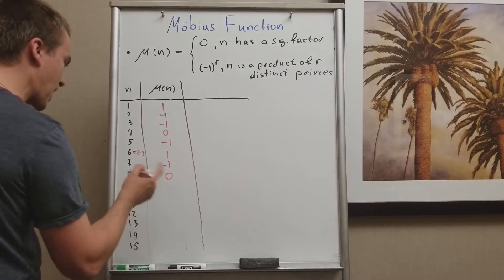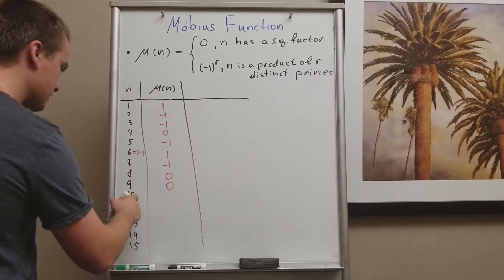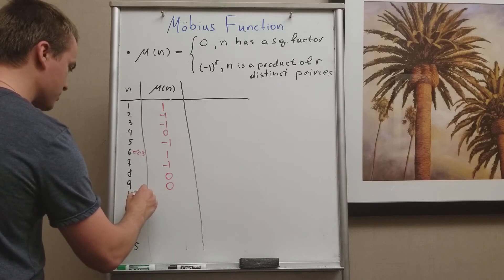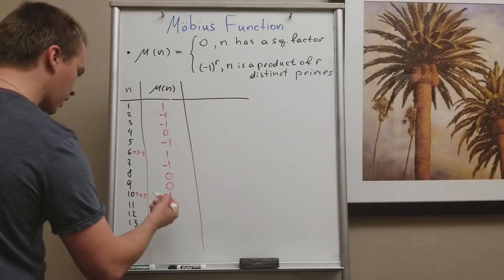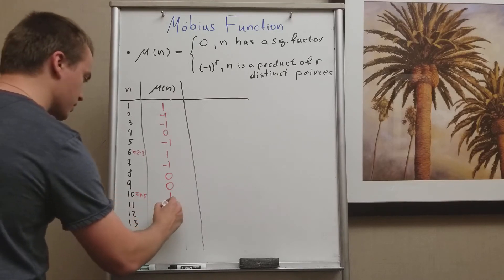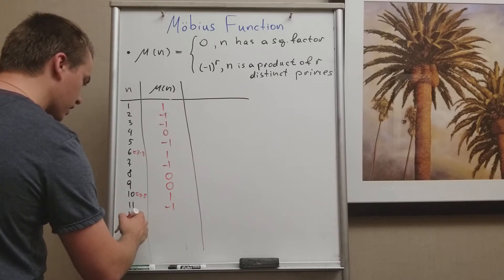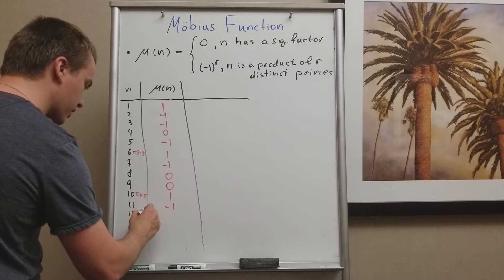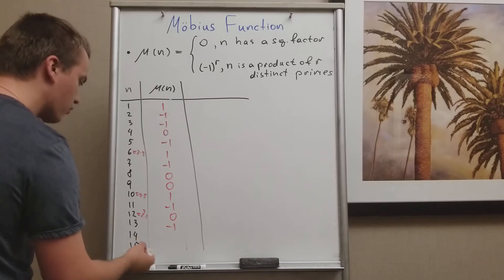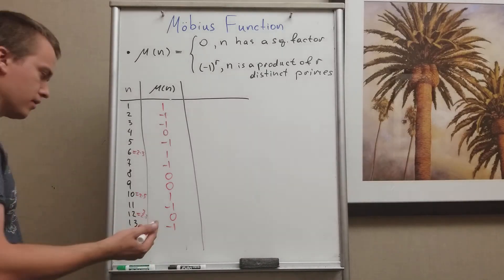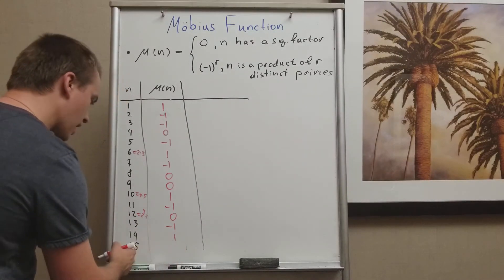μ(7) is negative 1. μ(8) has a square factor so it's zero. μ(9) has a square factor, zero. μ(10) is a product of two primes, 2 and 5, so it's 1. μ(11) is a prime number, so negative 1. μ(12) has a square factor like 2² times 3, so it's zero. μ(13) is a prime number, negative 1. μ(14) is 2 times 7, so it's going to be 1.